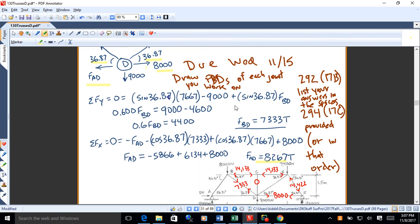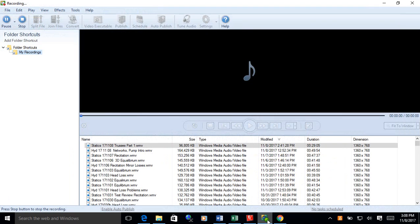So due Wednesday next week, I'd like 292 and 294. They're on pages 17B and C. Draw free body diagrams of each joint you work on. List your answers in the spaces provided on 17B and C. Or if you use your own paper, list them in the order shown on 17B and 17C.